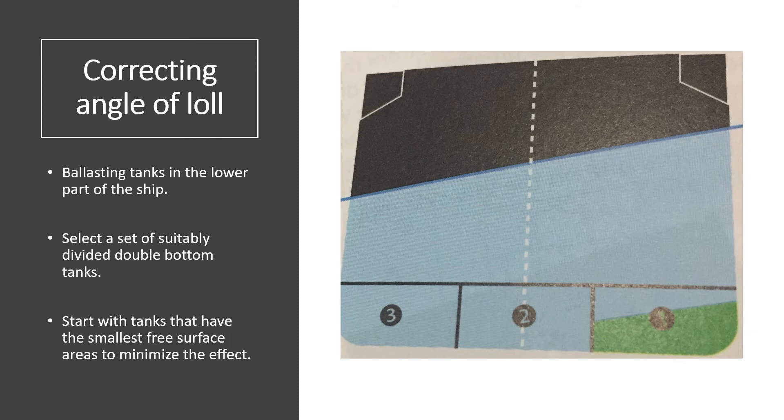Looking at these tanks, try to select a set of suitably subdivided double bottom tanks to ballast. Ideally, you must always start with the tanks that have the smallest free surface areas to minimize the effect of the free surface while filling. The order of filling should be: start by filling the tank on the lower side, let's say tank number one. Because of the introduction of more free surfaces while filling the first tank, the situation will initially worsen, but then when the first tank is completely full, fill in the center tank which is number two. When the center tank is full, fill the final tank which is number three. If the center of gravity is lowered sufficiently, the ship should come upright in an upright condition, having initially verified that the port and starboard listing moments were the same.